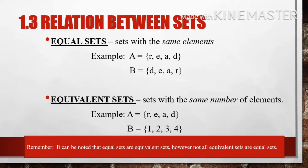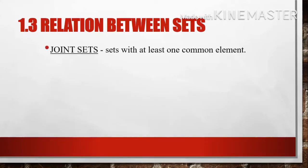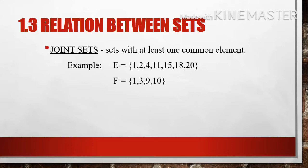The third relation between sets is joint sets — sets with at least one common element. Example: set E whose elements are 1, 2, 4, 11, 15, 18, and 20, and set F whose elements are 1, 3, 9, and 10. Sets E and F are considered joint sets because they have a common element, which is 1.